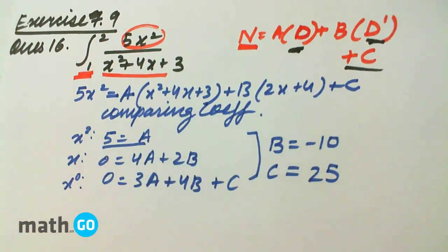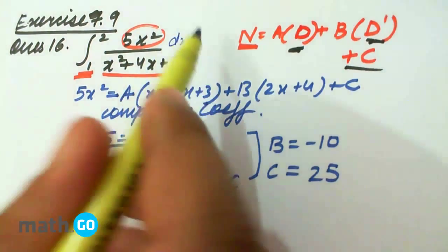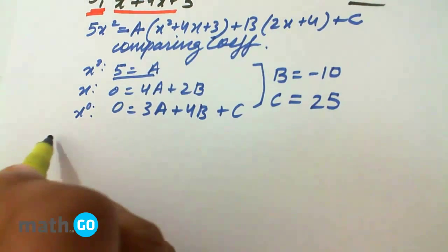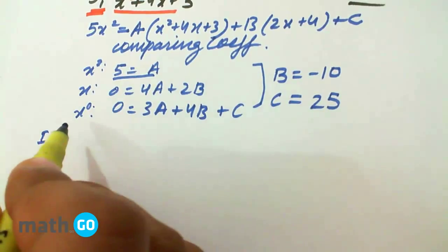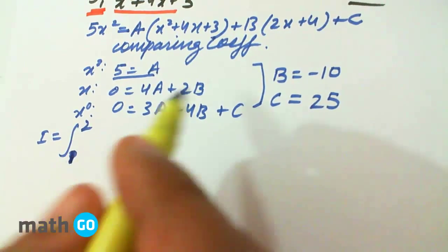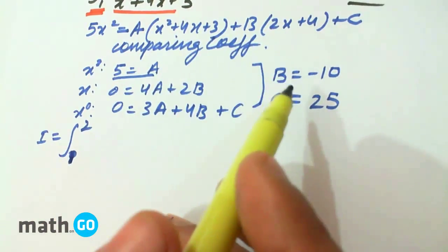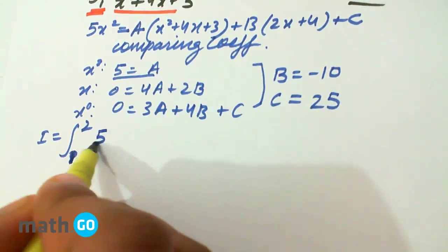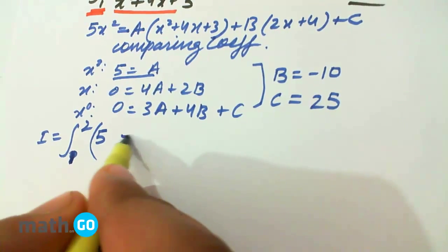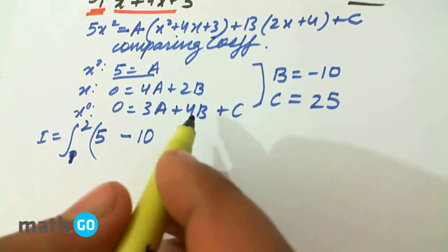So if we substitute these values in this expression, we get I equals integration from 1 to 2. First term: 5 into denominator by denominator, it will be cancelled, minus 10...